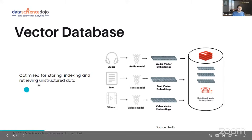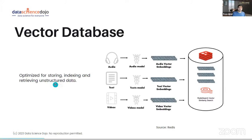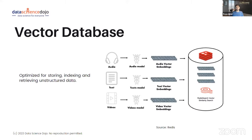Why do we need a vector database? Why not our regular good old databases? Because vector databases are optimized for storing, indexing, and retrieving unstructured data. Unstructured means not in rows and columns. For those who have done some machine learning, typically you have data in rows and columns. But what if the data is not in rows and columns? Think of this as converting each of these entities — whether they are videos, text, or audio — converting them into vectors.